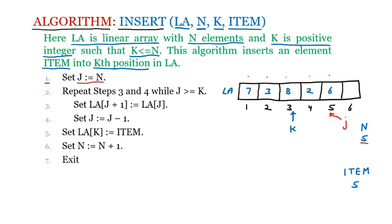Line two says: repeat steps three and four — meaning they are inside a loop — while the condition j greater than or equal to k is true. Currently j is five and k is three, which is the position where we want to insert, so five is greater than or equal to three and the condition is true.